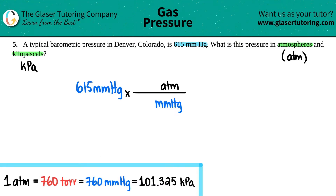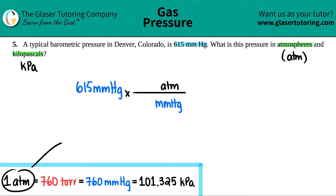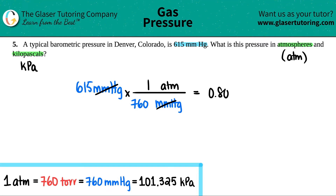I put atm on top and use my conversion factors. Since all the major pressure units are equal to each other, I pick atm and millimeters of mercury: for every 1 atm there are 760 millimeters of mercury, so 760 goes on the bottom. Cancel the units and that's the first answer: 615 divided by 760, to three sig figs, gives 0.809 atm.